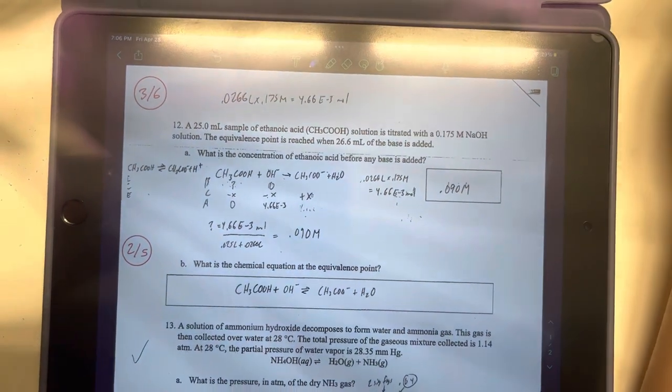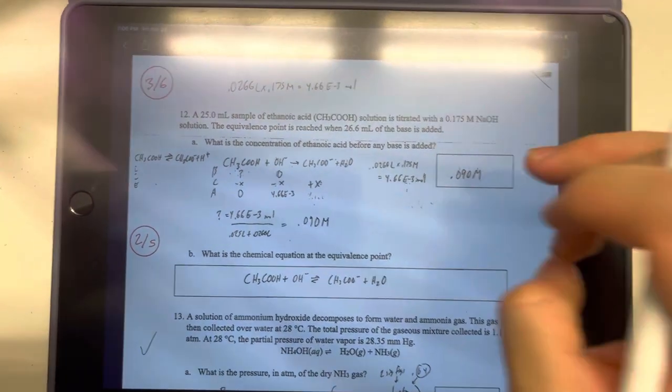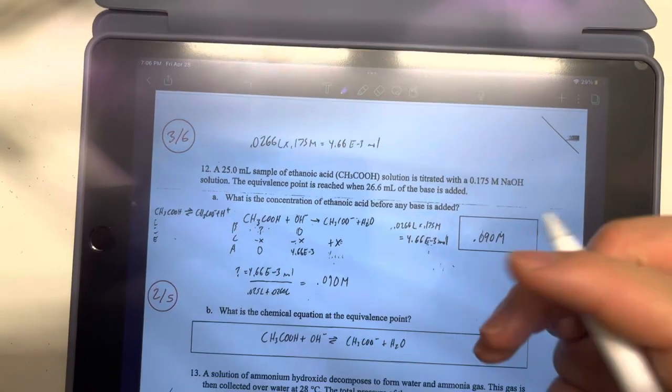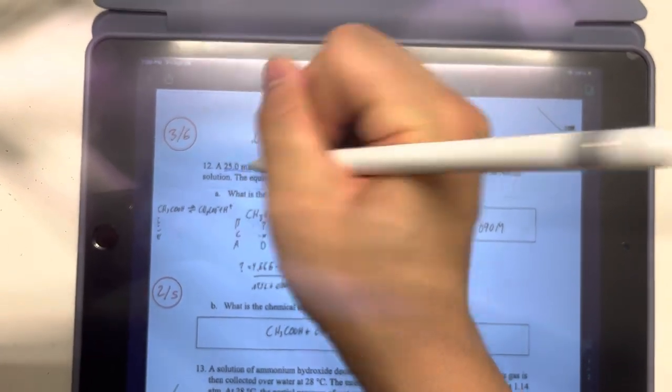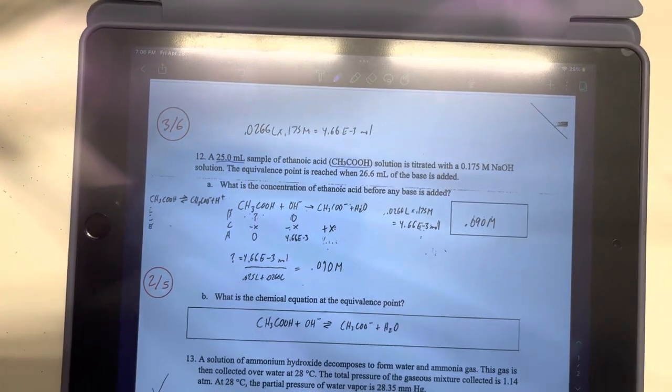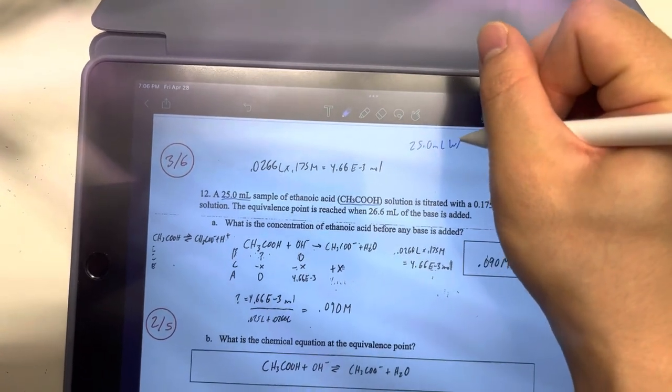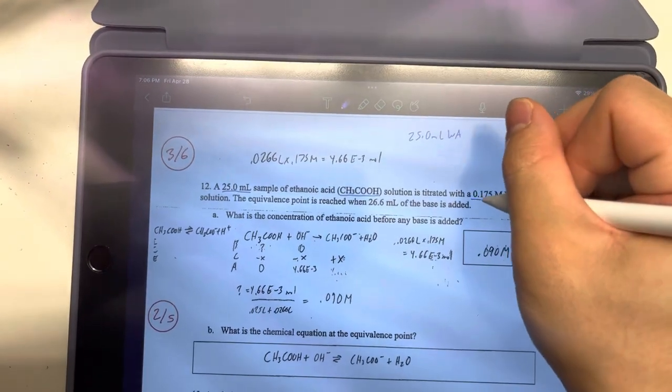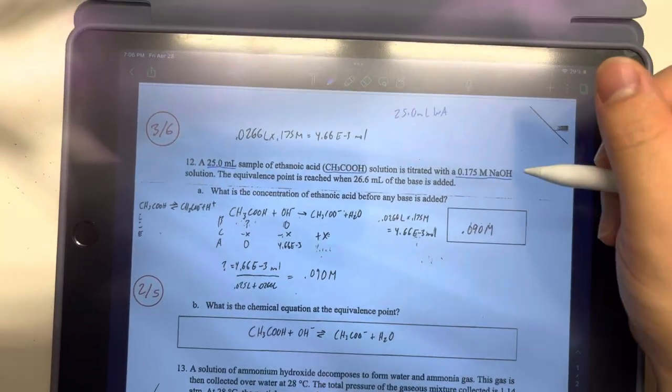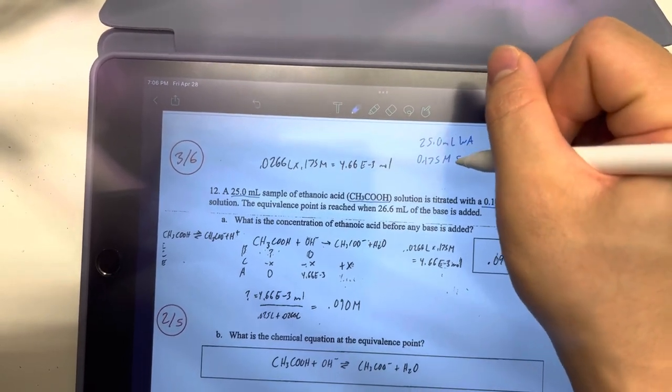Basically how I would do it is I would go over how I would approach the problem, and then I would go over what the student went wrong or how the student went wrong. So the first thing I would do is I would align what we have. So you have 25 milliliters of what kind of acid, weak or strong? Weak acid. And then we have 0.175 molars of NaOH, which is what kind of base, weak or strong? It's a strong base.